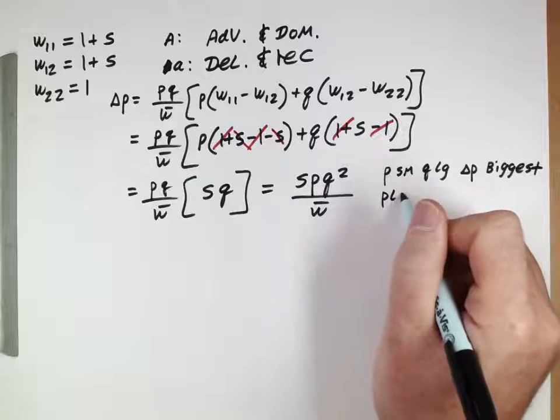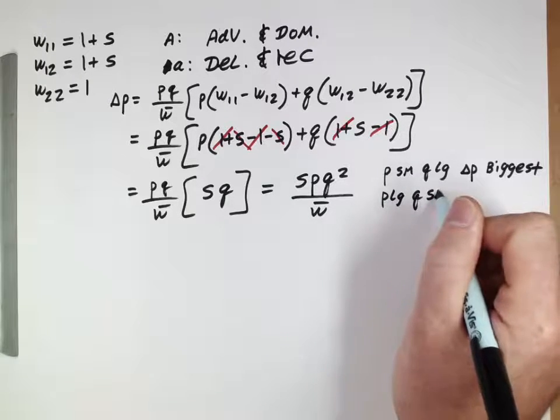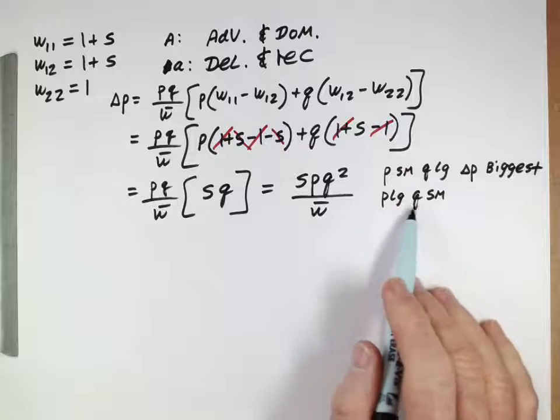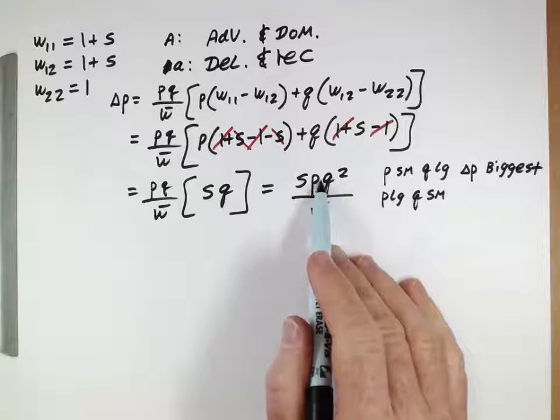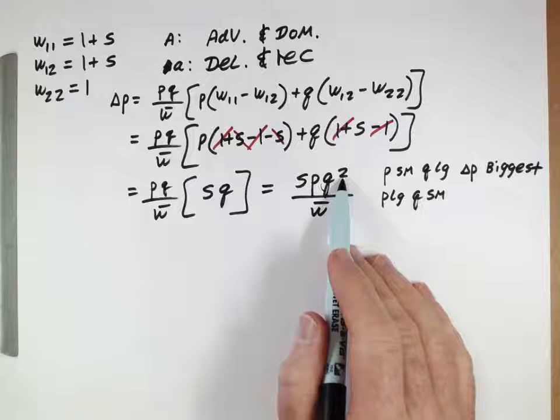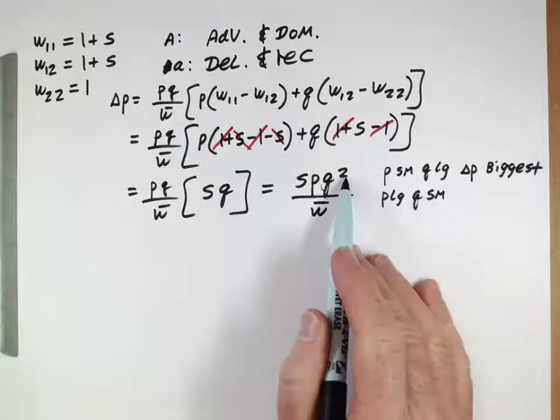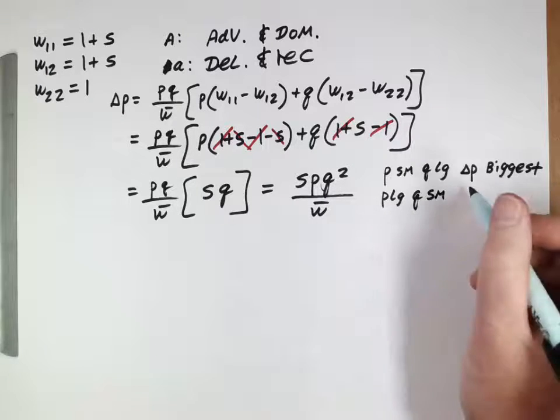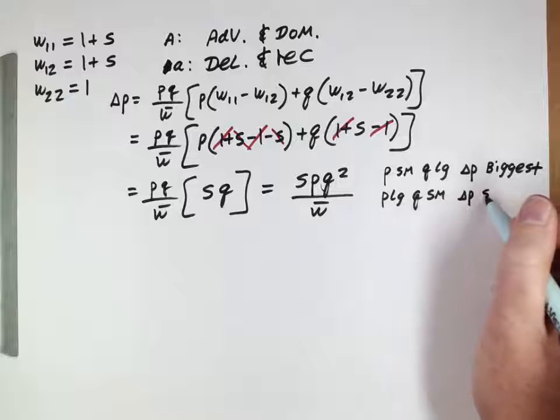When P is large and Q is small, because remember they trade off against each other. Well, these things are both less than 1, and this thing is being squared. So, when Q is small, squaring it will make it even smaller. That will give us delta P being the smallest.